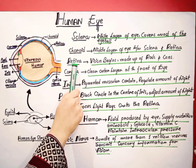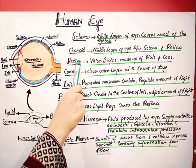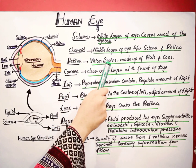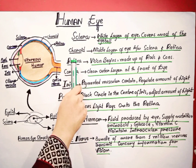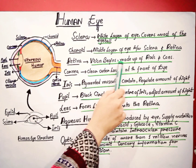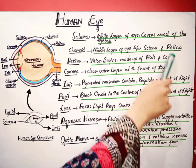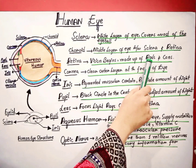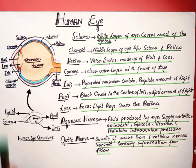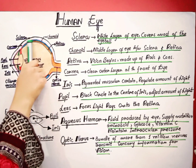Now we have the third layer of our eye, which is the retina. The retina is the part of our eye from where vision begins. The retina is made up of photoreceptors, and these specialized cells — the photoreceptors — are made up of rods and cones. This orange part indicates the retina.